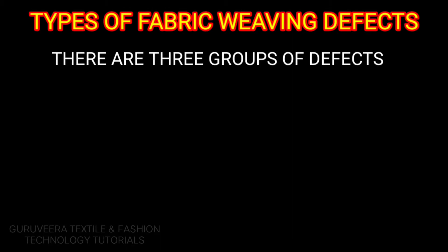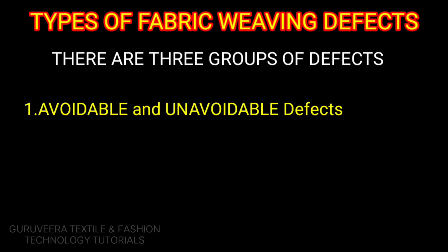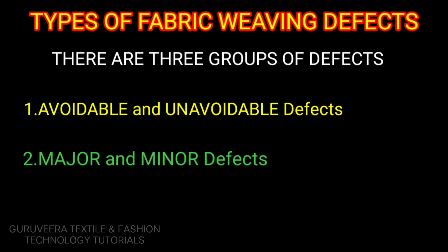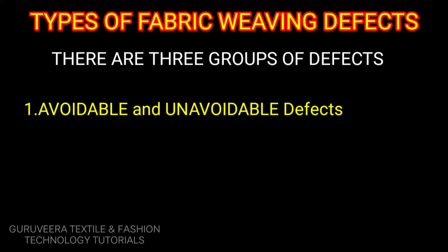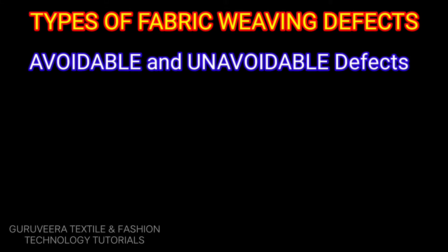There are three groups of fabric weaving defects: avoidable and unavoidable defects, major and minor defects, and mendable and unmendable defects. The first group is avoidable and unavoidable defects.